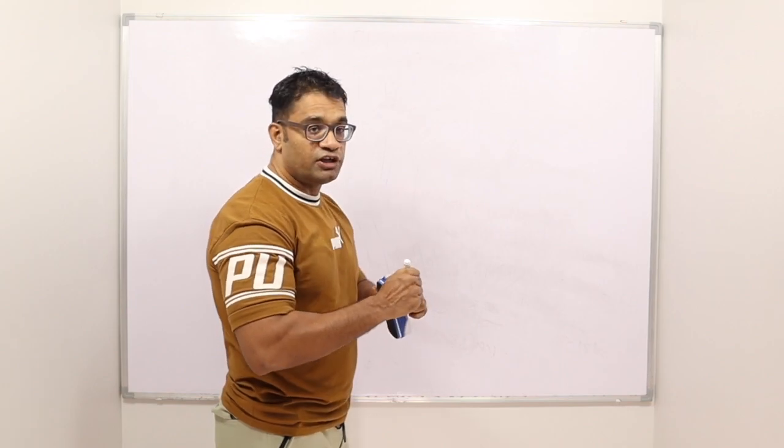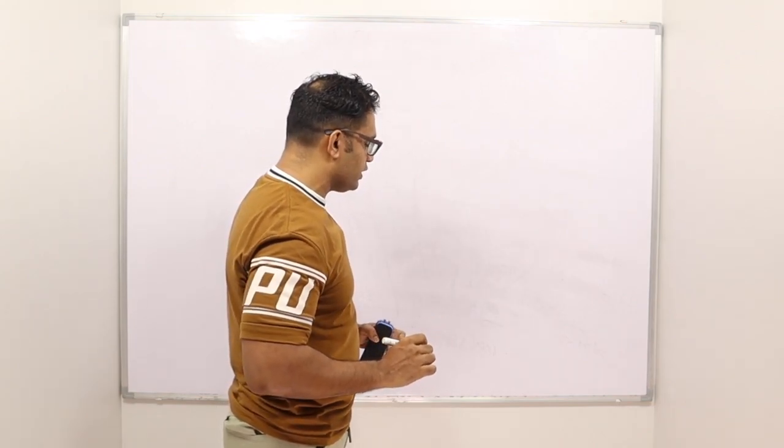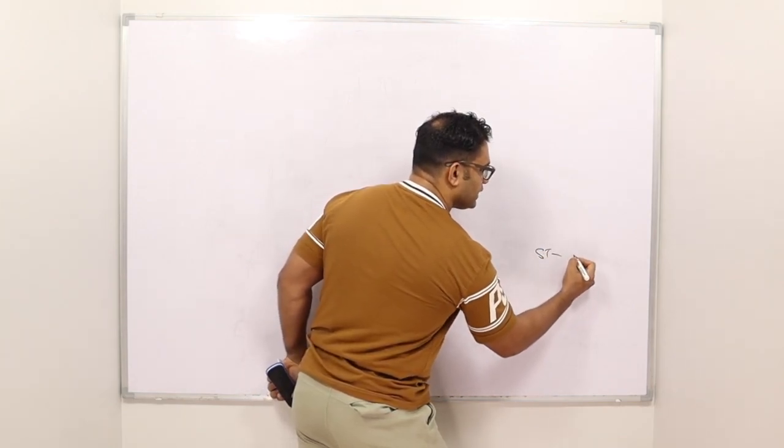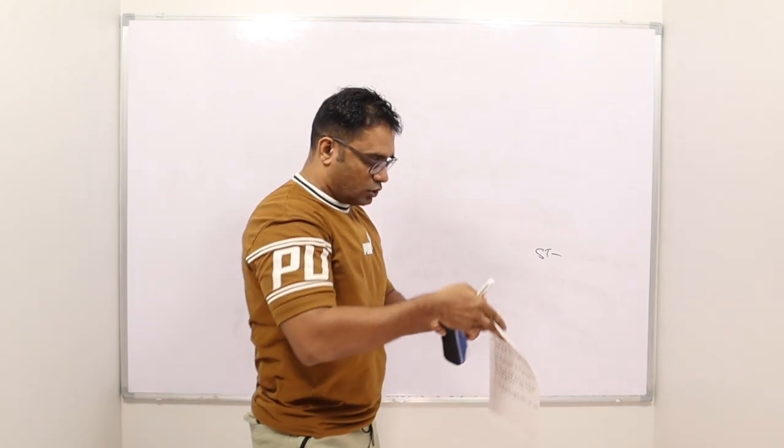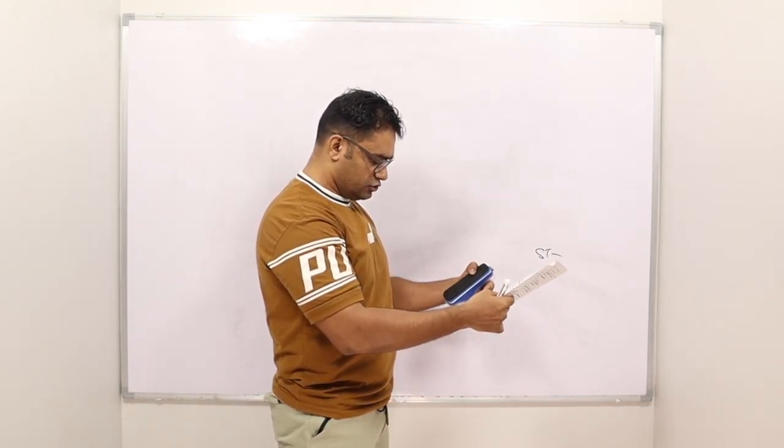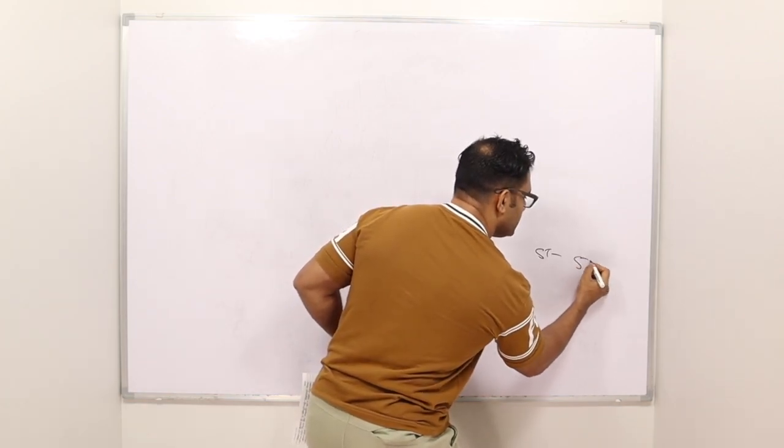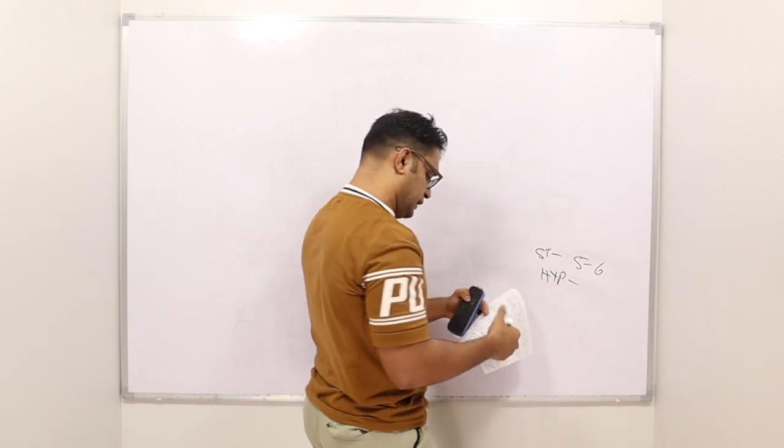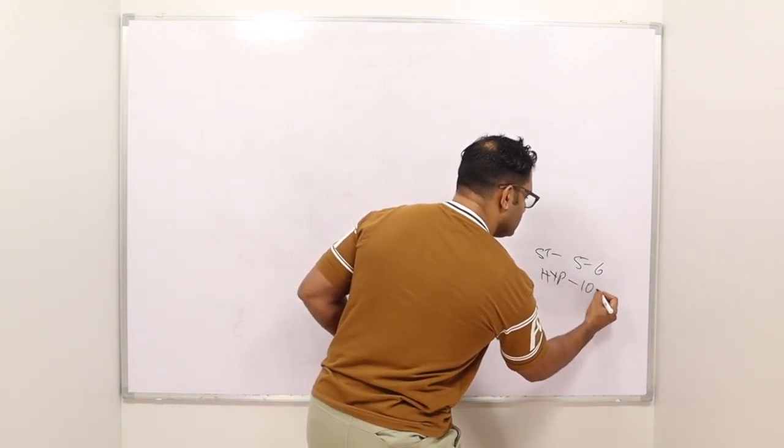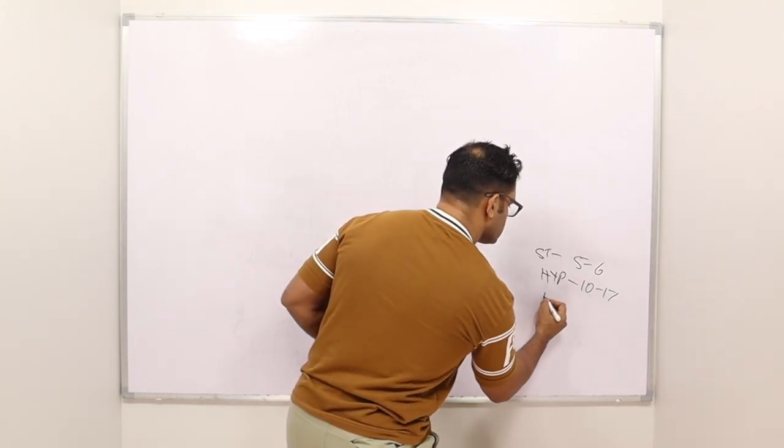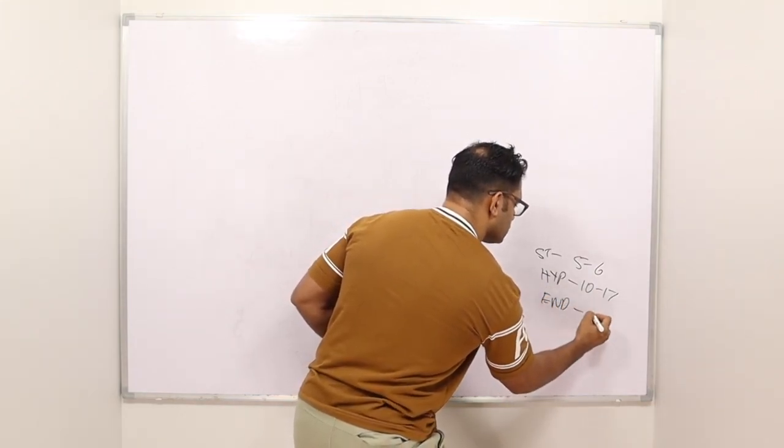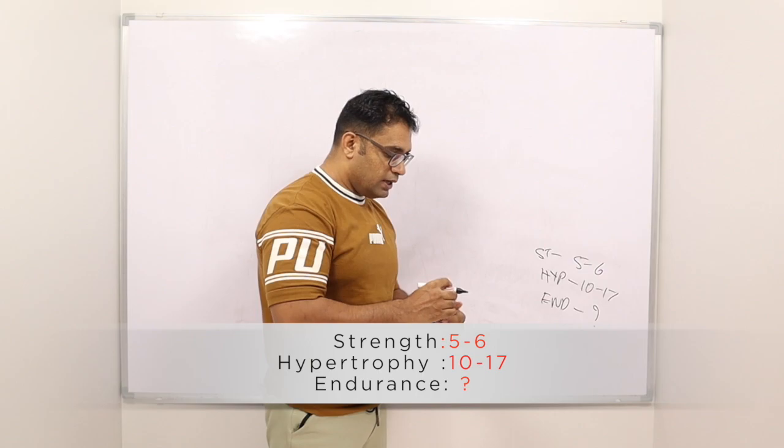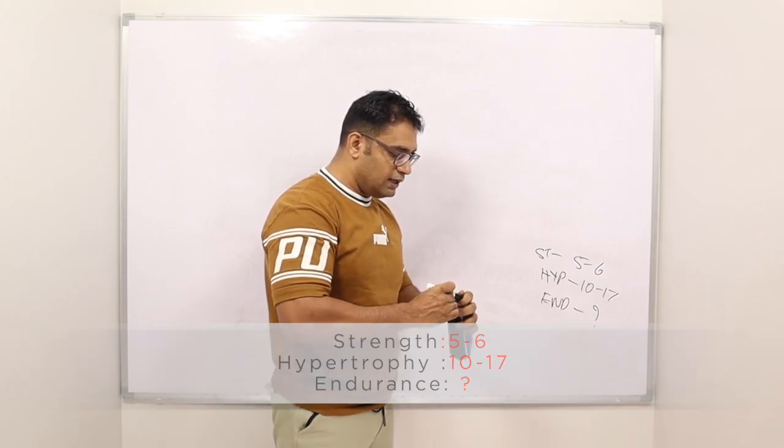The reference points that our good friend gave here is strength - let me just check what he mentioned - 5-6 for strength, hypertrophy he says 10-17, and endurance is whatever. Now, those are the figures that our good friend gave us here. He wants to understand rep range, and he was very clear that he wants to understand this from a point of view of strength.